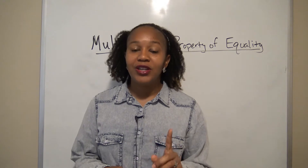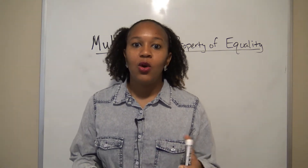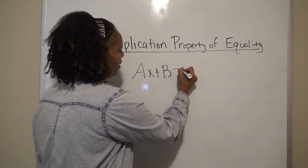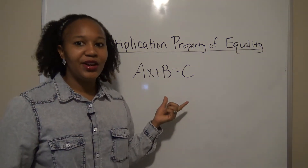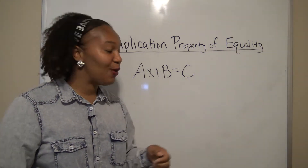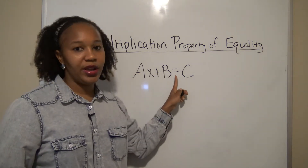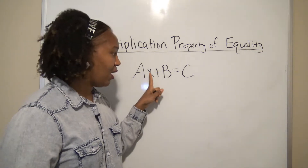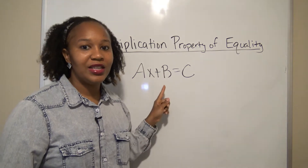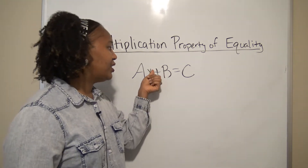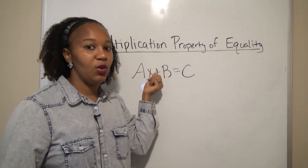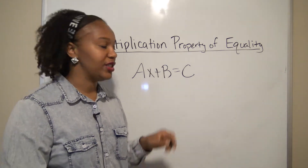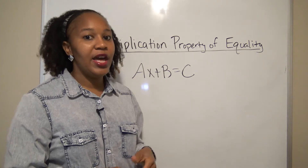What is the multiplication property of equality? Well, first of all, you use the multiplication property of equality when you are solving linear equations. A linear equation is an equation of the form ax plus b equals c. What makes it linear? It has an equal sign, which makes it an equation, and it has one variable — our variable here is x — and the highest exponent on that variable is 1. There's no exponent written, but there's an understood exponent of 1. The a, b, and c just represent some numbers.